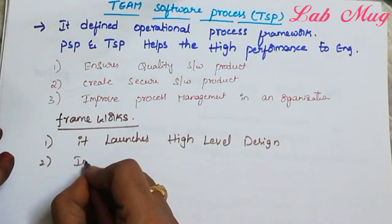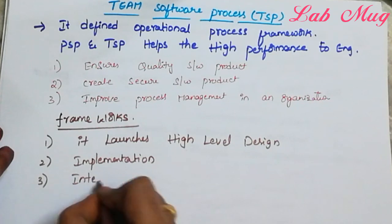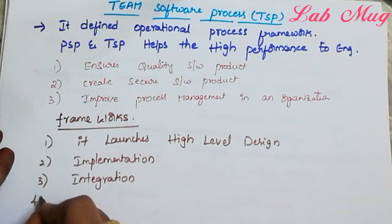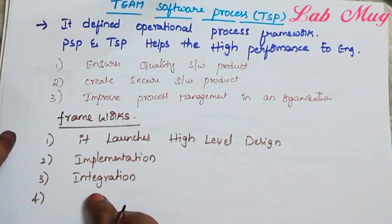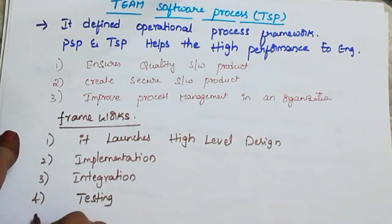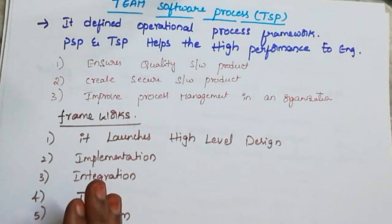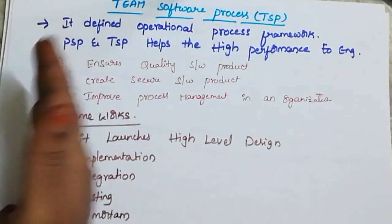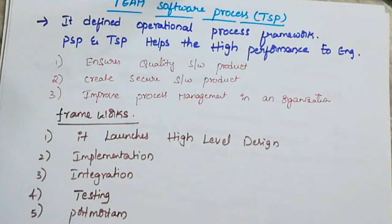The next stage is implementation, which is nothing but coding — writing code for the software process. After that comes integration, which is a testing technique where each individual module is tested. Then total system testing is performed. The last activity is post-mortem. These are the operations and activities performed in TSP. PSP was about working personally as an individual, whereas TSP is about working as a team. The frameworks differ because PSP is based on one person while TSP frameworks are based on the total team.